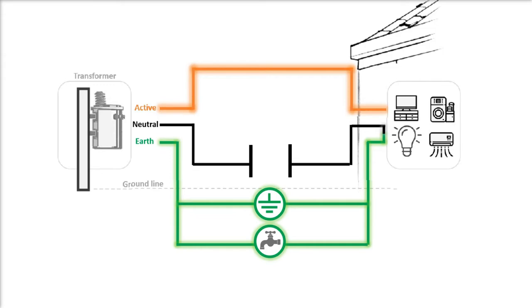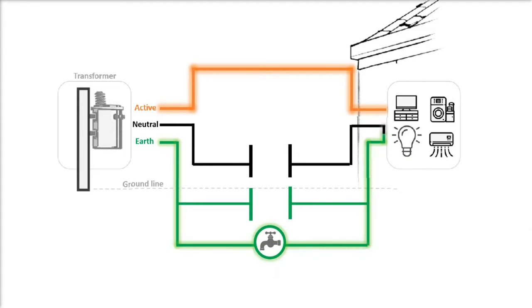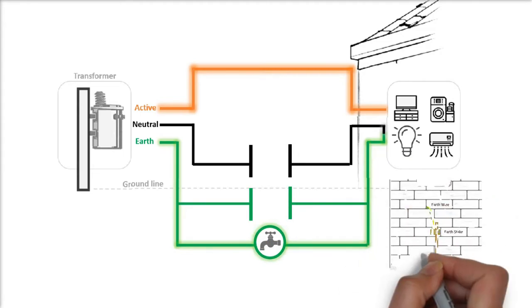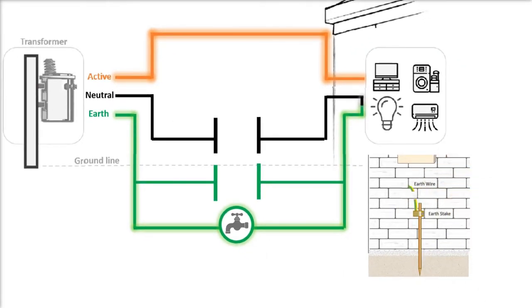Okay, but what if the earth connection also gets broken? Then most of the electricity will use the water pipes connection as its return path. And a break in the earth connection means that the safety switch or circuit breakers cannot be activated. This can be a problem because electricity always looks for the easiest way back to the source, the transformer, through the path of least resistance.